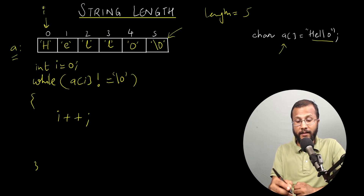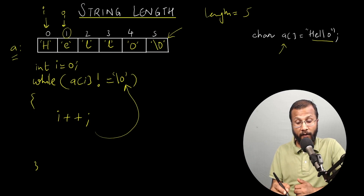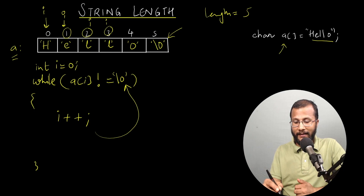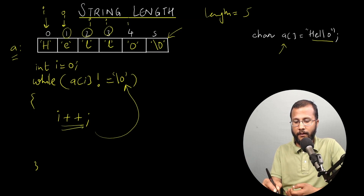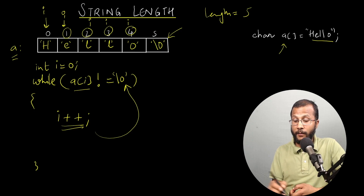So i was initially zero, now i becomes one. I go back and check index i=1; the element is e. a[i] equals e, and e is not equal to null — that is true — so it goes inside the loop and increments i. Now i becomes two. Check again: l is not null, so increment i. i becomes three. At index three, it's l again — not null — so increment i. i becomes four. At index four, this is o. O is not equal to null, they are different characters, so it's true — it goes into the loop body and increments i. Now i becomes five.